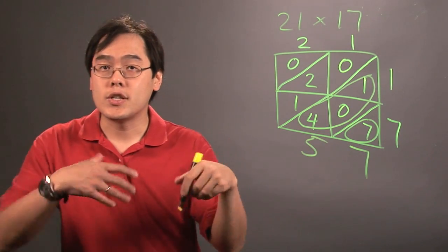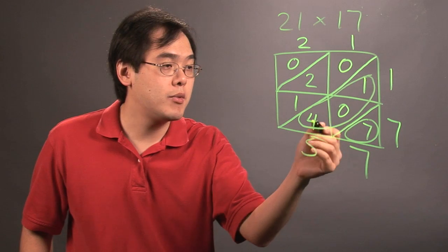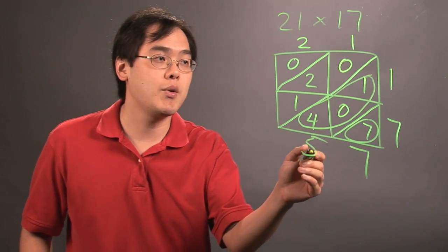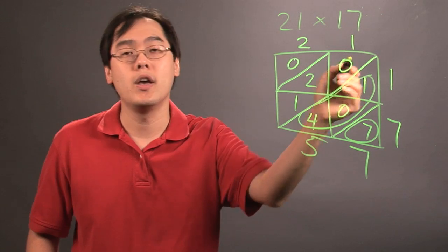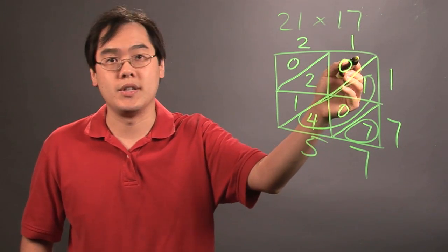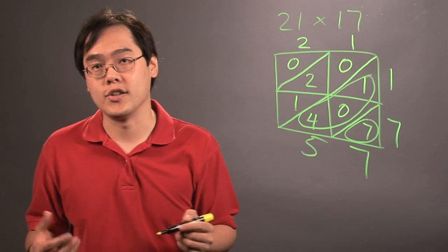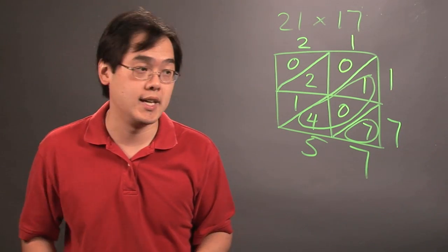Now, just as a note, if you happen to add these three numbers and you have a number that's bigger than ten, what you're going to do is you would have written the zero here and carry over the one at the very top of this following layer of diagonal, and then continue adding, so just to make that adjustment if you need it.